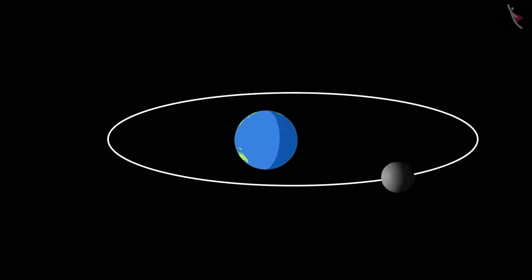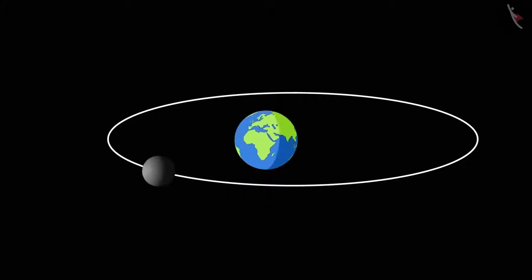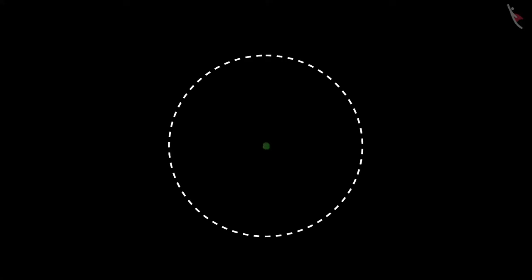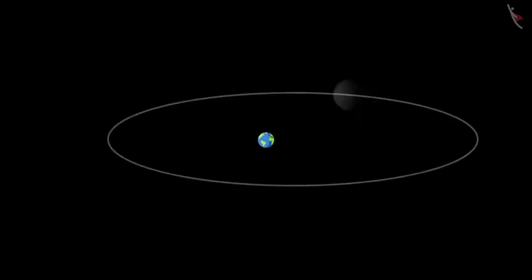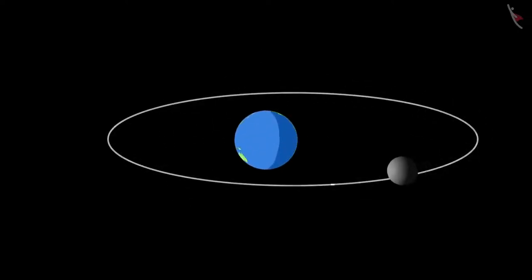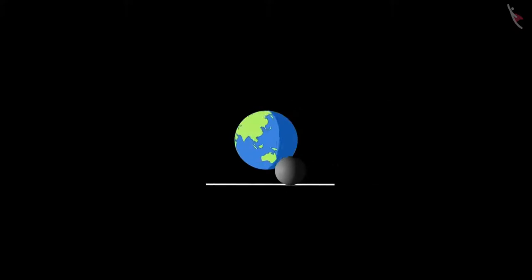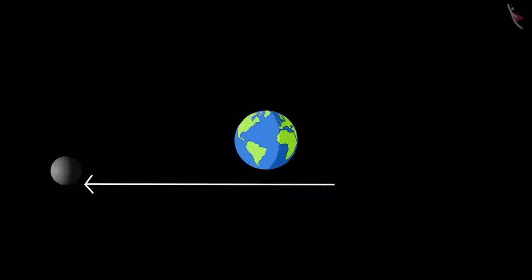One of the examples of centripetal force is the motion of the moon around the earth. The moon orbits around the earth due to the centripetal force provided by the gravitational force of the earth. A lack of centripetal force would put the moon in uniform straight line motion.